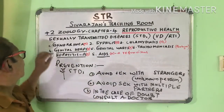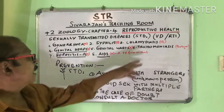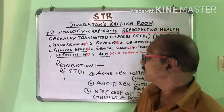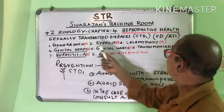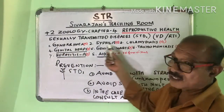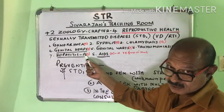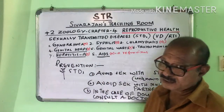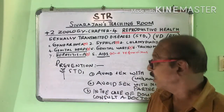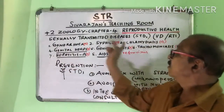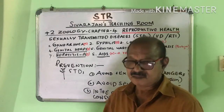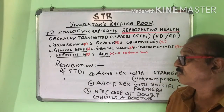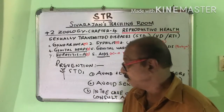Another example: if Gonorrhea, Syphilis, Trichomoniasis, and Hepatitis B are given and you are asked to find the odd one, the answer is Hepatitis B — because Gonorrhea, Syphilis, and Trichomoniasis are curable, while Hepatitis B is incurable. Bear in mind: Genital Herpes, Hepatitis B, and AIDS are incurable while the others are curable. Dear students, I hope you have understood sexually transmitted diseases. In the next class, we will discuss infertility. Thank you.